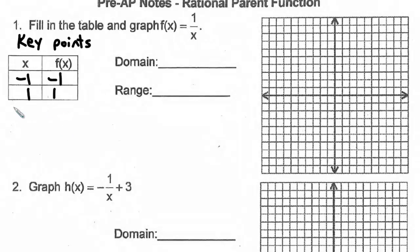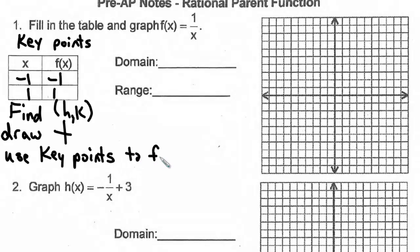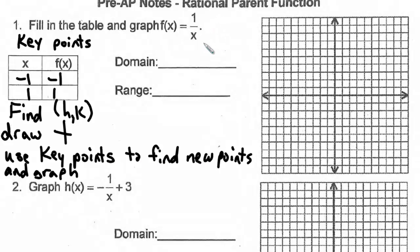The first thing we're going to do when we graph these is define h and k. When we find h and k, we draw a cross through that point. In the parent function, h is 0 and k is also 0. So let's plot that point and draw a cross through it.